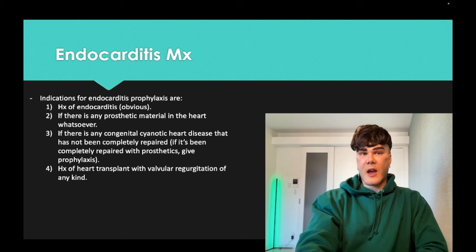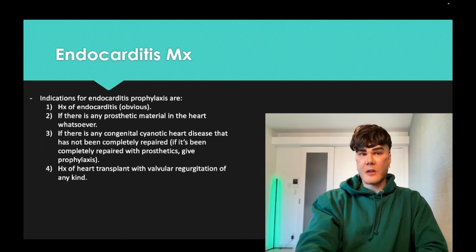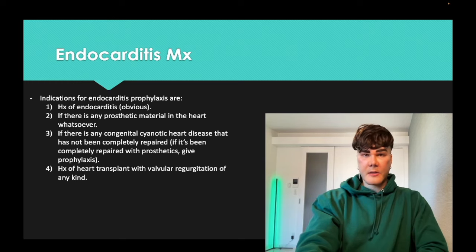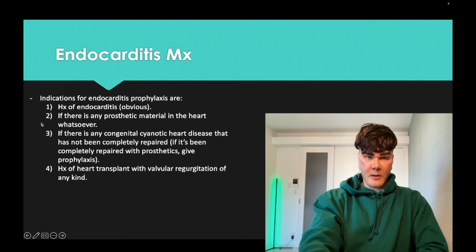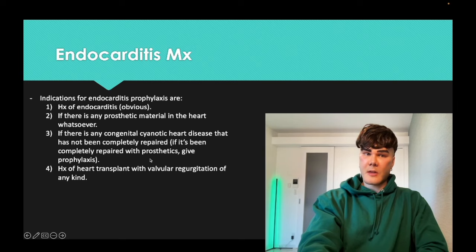Endocarditis prophylaxis indications — high yield for 2CK: history of endocarditis, any history of cyanotic heart disease, congenital cyanotic heart disease, any prosthetic material in the heart whatsoever, incompletely repaired congenital heart disease, and a heart transplant with a valve abnormality.